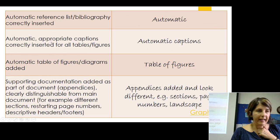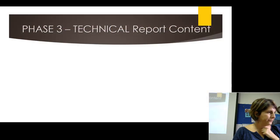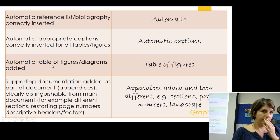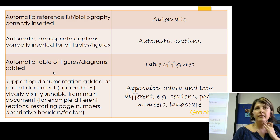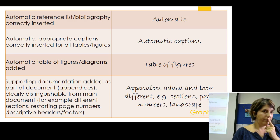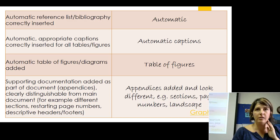Then we get to the automatic things: bibliography, captions, table of figures, and the appendix — nothing changed here. But there's a double mark for table of figures. Is it automatic? I find some use one that's not automatic and one that is. Table of contents is only one mark — either you did it automatic and it's updated, or you get no marks. But for table of figures there are two marks: one for having it, and one for it being automatic. So we'll work one in for table of contents as well for next year.